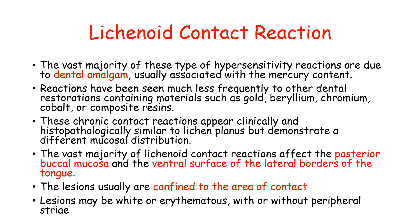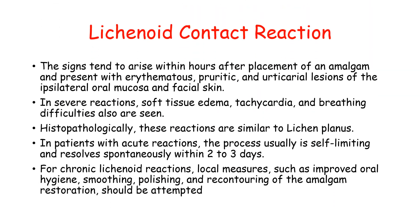The vast majority of lichenoid reactions affect the posterior buccal mucosa as well as the ventral surface and lateral borders of the tongue. Lesions are usually confined to the area of contact and do not migrate like lichen planus lesions. They may be white or erythematous, with or without peripheral striae. Signs tend to arise within hours after placement of an amalgam restoration, presenting with erythematous, pruritic, and urticarial lesions of the ipsilateral oral mucosa and facial skin.